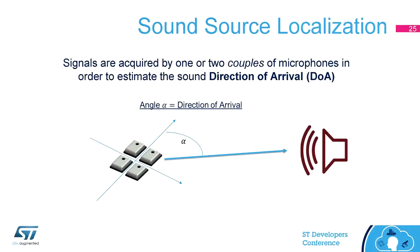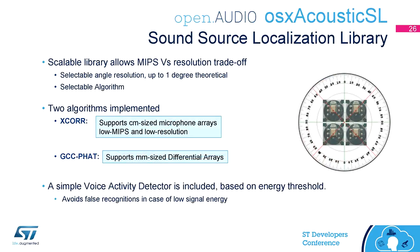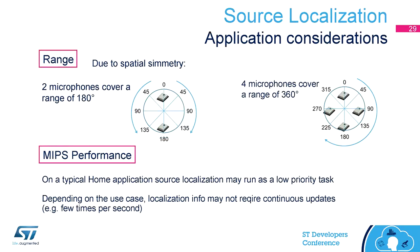Moving quickly to the next algorithm: sound source localization is a routine that tells you the angle — the direction of arrival of a sound source. We have implemented it with two different algorithms offering different trade-offs between MIPS and performance. With two microphones you can detect a range of 180 degrees, not more than that — this is by geometry, by the symmetry of the system, not the algorithm.